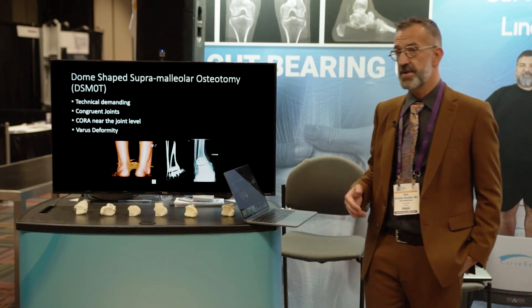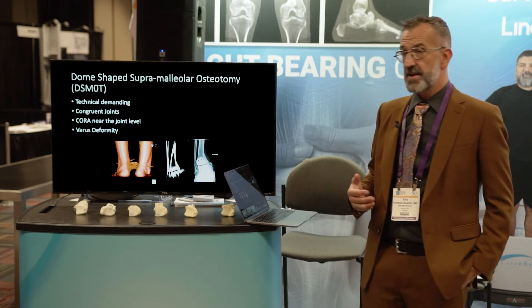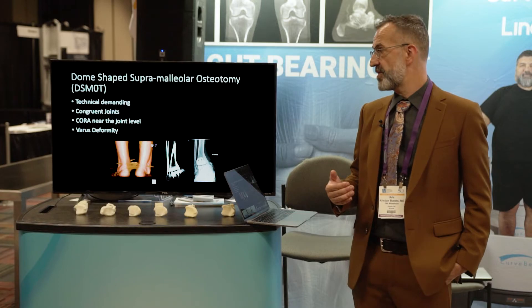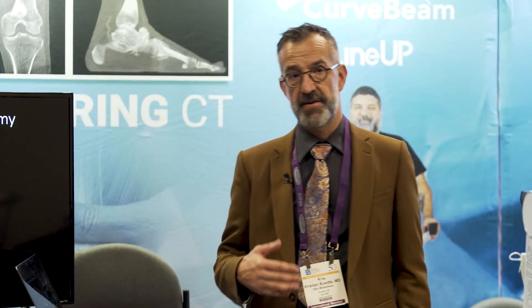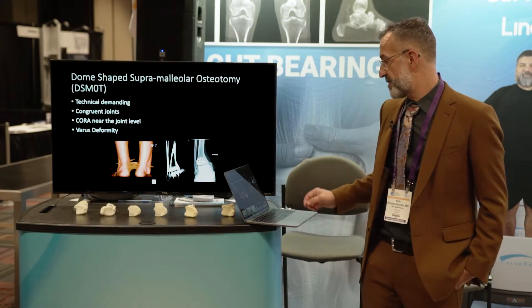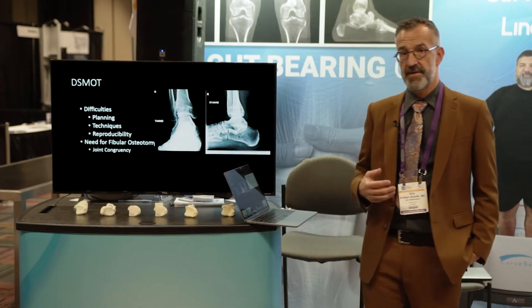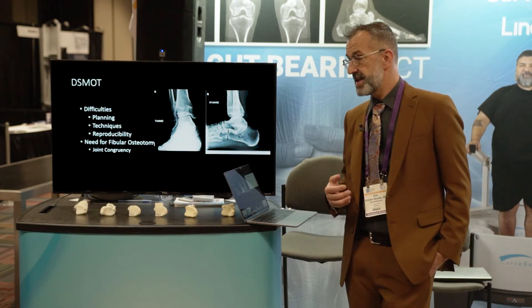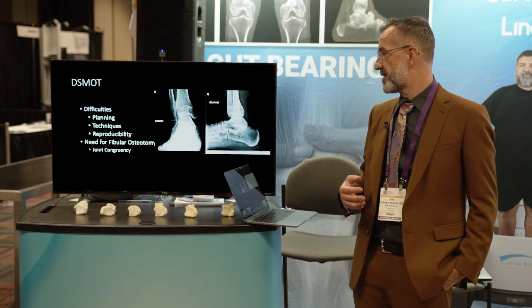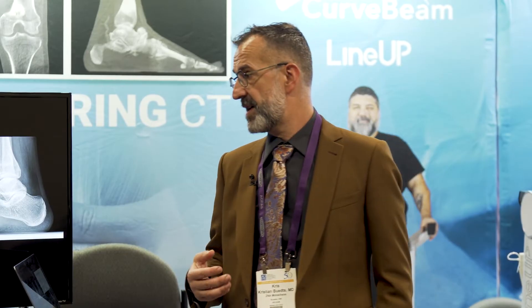When do we use a dome-shaped supramalleolar osteotomy? It's a very technically demanding procedure. You can use it in congruent joints or when the center of rotation is near the joint level with large varus deformities. It's a difficult surgery without planning, and the technique can be very challenging with difficult reproducibility, so you need guides to make it a safe surgery.